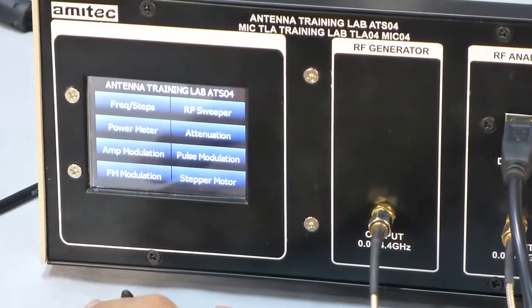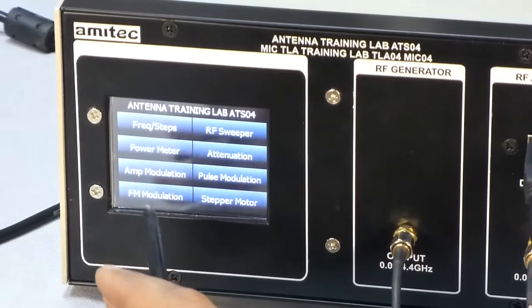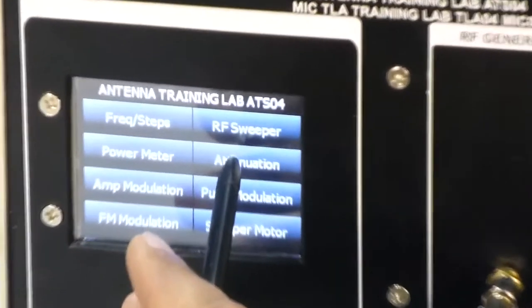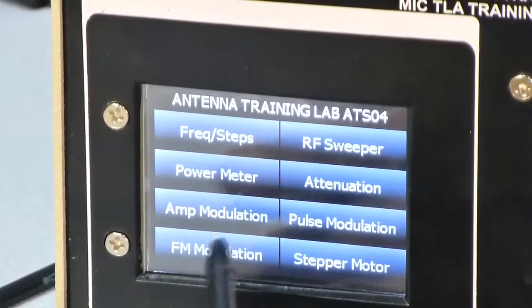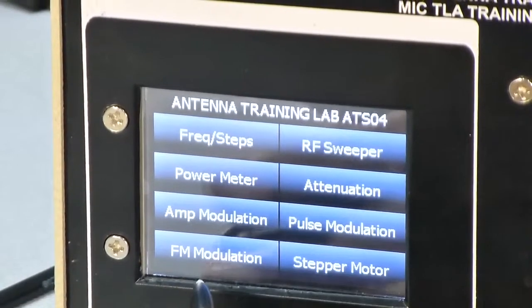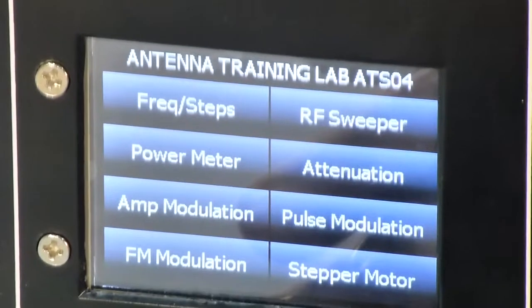On the front main screen you can see few options like frequency and step, RF sweeper, power meter, attenuation, amplitude modulation, pulse modulation, FM modulation and stepper motor control.